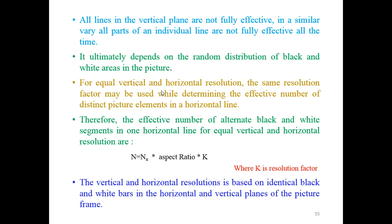This problem may be solved because in the screen there should be equal number of vertical and horizontal resolution. The same resolution factor may be used while determining the effective number of distinct picture elements in the horizontal line. Therefore, the effective number of alternate black and white segments in one horizontal line for equal vertical and horizontal resolution are N equals NA times aspect ratio times K.